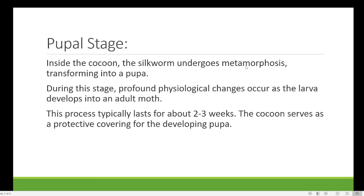Inside the cocoon, the silkworm undergoes metamorphosis, transforming into a pupa. During this stage, profound physiological changes occur as the larva develops into an adult. The larva converts into a pupa — pupa is actually a passive, inactive state with no movement. The process of metamorphosis usually takes two to three weeks. The cocoon acts as a protective covering for the developing organism.